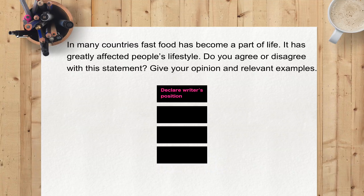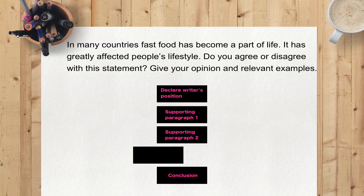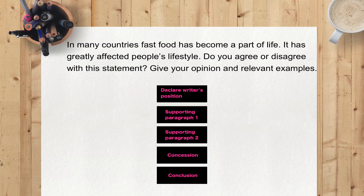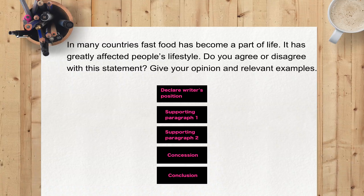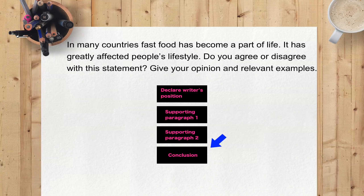The structure of course is an argument essay. You would declare a position in the introduction paragraph and then uphold it in your supporting paragraphs using appropriate examples. Extending the response by including an area of concession to the opposing point of view could be included, but this is not entirely necessary as it is not asked for by the question. The conclusion paragraph closes the essay with a restatement of position and some sort of hope or recommendation for the future.